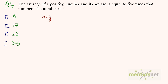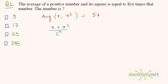The average of a positive number and its square is equal to 5 times that number. If the number is x, its average is 5x. We have two numbers here, so the average is the sum of those two numbers divided by the count, which is 2. So x plus x squared divided by 2 is the average, which is equal to 5x.